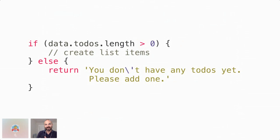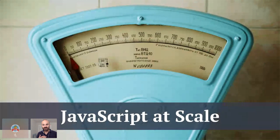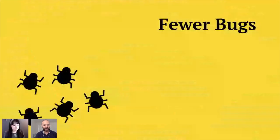Frameworks use a process called diffing to look for differences between the current UI and how it should look, and only update what's needed. The big well-known frameworks like React and Vue use something called the virtual DOM — a JavaScript-based representation of the real UI — to figure out what needs updating when data changes. Keeping that in memory in JavaScript is technically better for performance when working with really large data sets. And because established frameworks are used by thousands of developers at hundreds of companies, you have more people testing the code, finding bugs, and pushing fixes — so the code is more resilient.